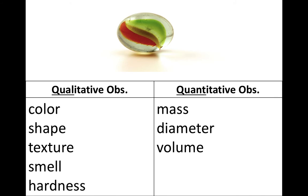Here's another object, and we could take some time to make observations about this one here, too. Remember, that's qualitative observations, color, shape, texture, smell, hardness, quantitative, mass, diameter, and volume.